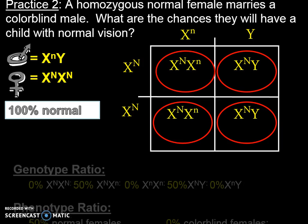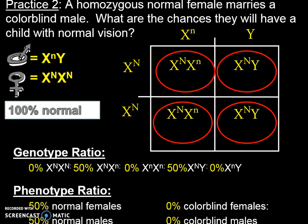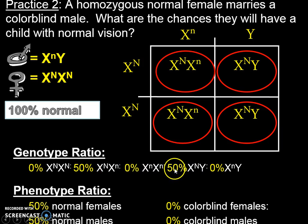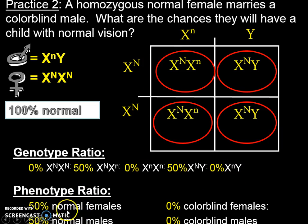We do want to practice doing our ratios. Genotype ratios: 0% homozygous normal female, 50% carrier female, 0% abnormal female, 50% normal male, 0% abnormal male. For phenotype: 50% normal females — they were carriers, but normal — and 50% normal males. That adds up to 100%, which makes sense. 0% colorblind male or female. Wonderful job — let's practice more together when we see each other.